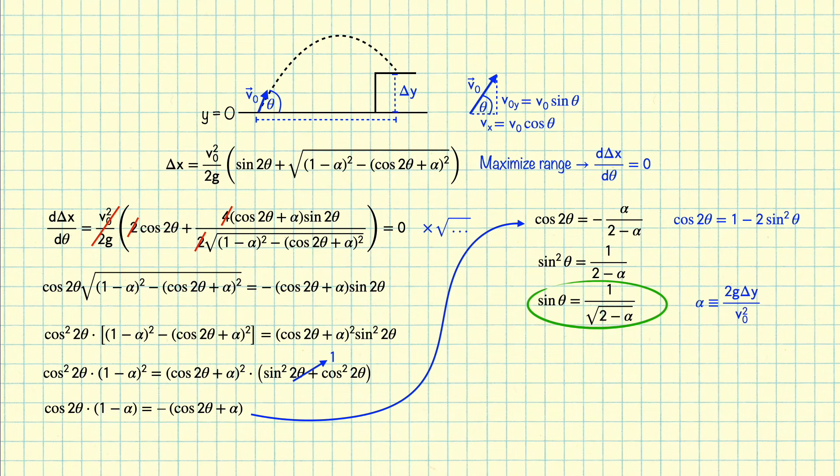Notice also that if alpha equals 1, we get sine theta equals 1, which corresponds to an angle of 90 degrees. This means that to throw a ball at that height you have just enough strength to get it there if you throw it straight up.